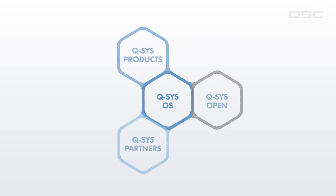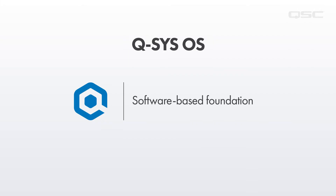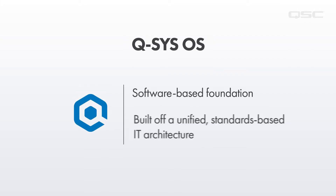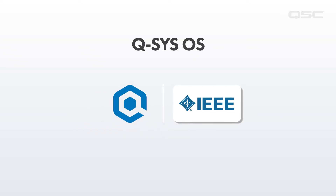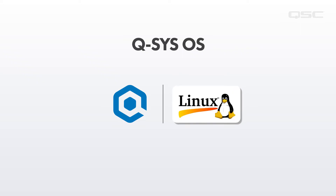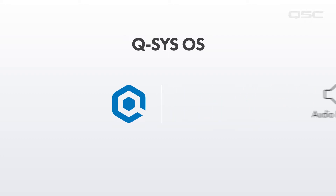It all starts with the Q-SYS operating system. The Q-SYS OS is a software-based foundation for Q-SYS that makes everything possible, and it's built off of a unified, standards-based IT architecture. We used industry-standard principles and mission-critical technologies like IEEE standard networking protocols, Intel processing, Linux, and conventional programming languages to make it as flexible, scalable, and performance-driven as possible.